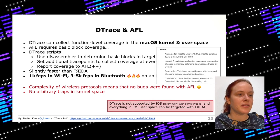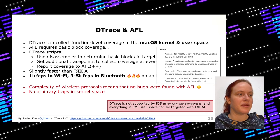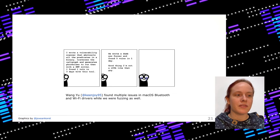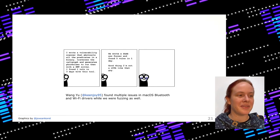Wi-Fi and Bluetooth, which Stefan fuzzed, are very complex protocols, so he couldn't find any new bugs with AFL, and in kernel space you only get function-level coverage. Despite not finding any bugs in Wi-Fi or Bluetooth, he got a CVE because DTrace itself has bugs — so at least some finding. On iOS, DTrace is not supported out of the box, so it might require a lot of tweaking. Meanwhile, Wang Yu found issues in macOS Bluetooth and Wi-Fi drivers through much better state modeling of how messages interact and what is important to reach certain functions.